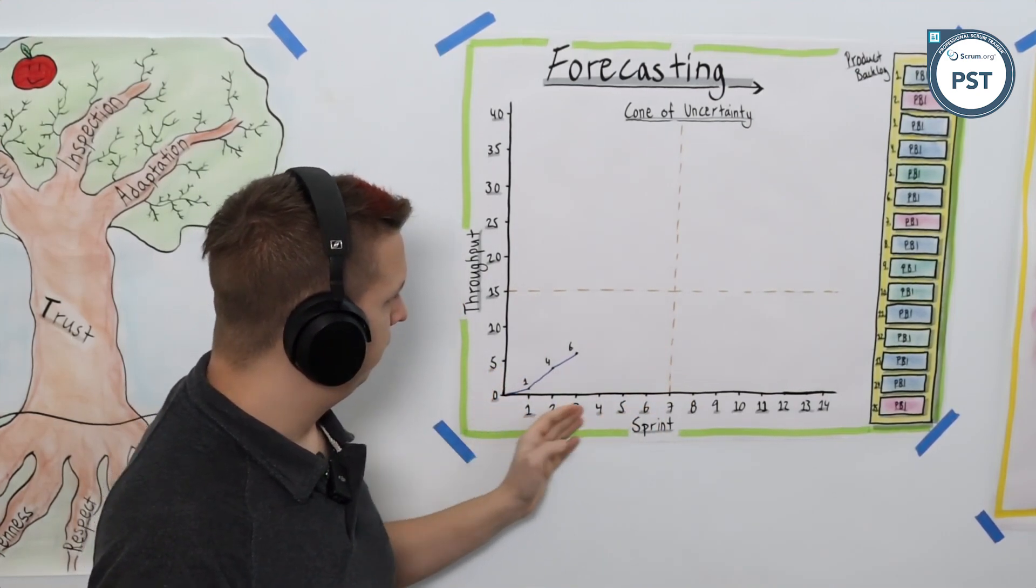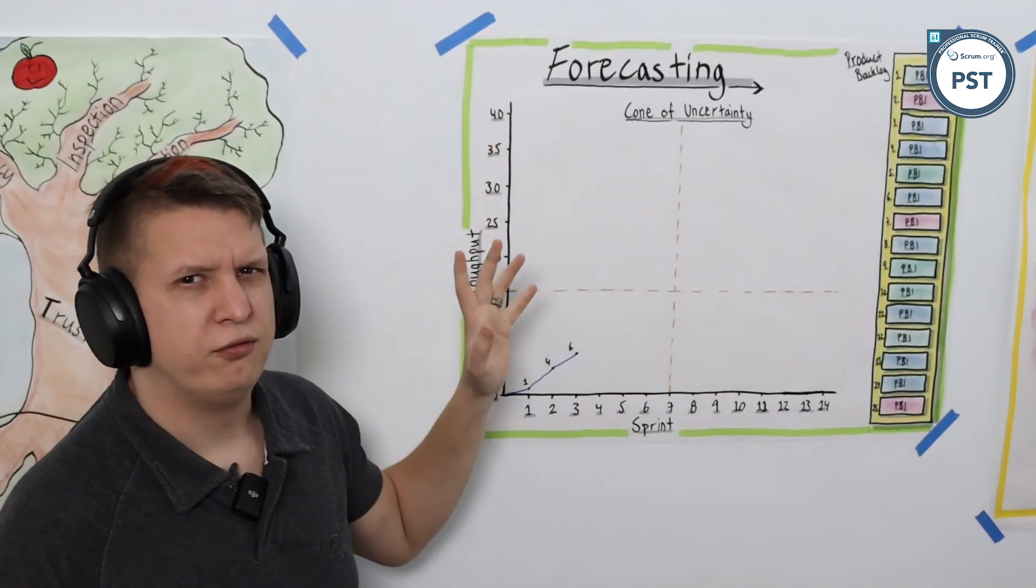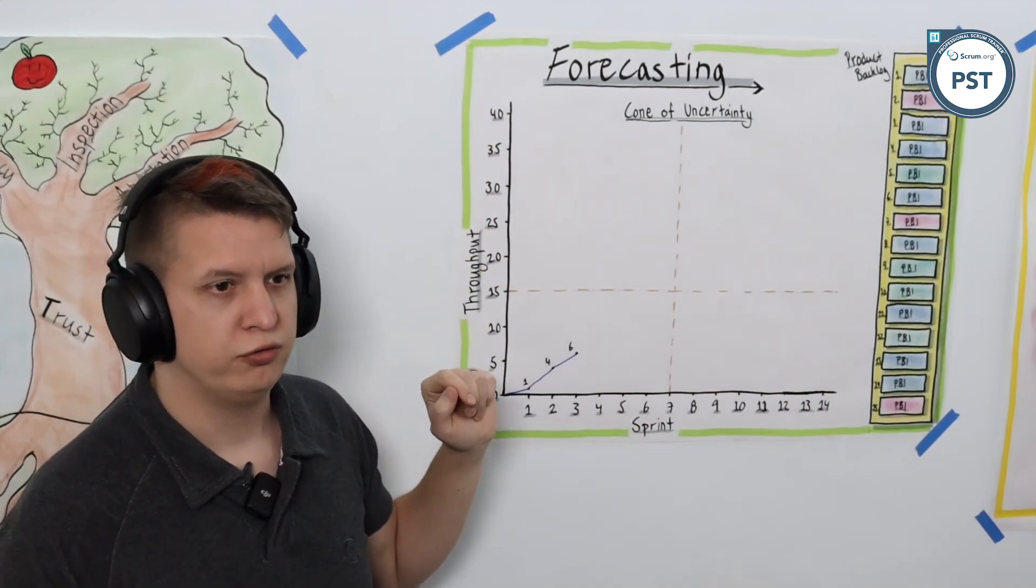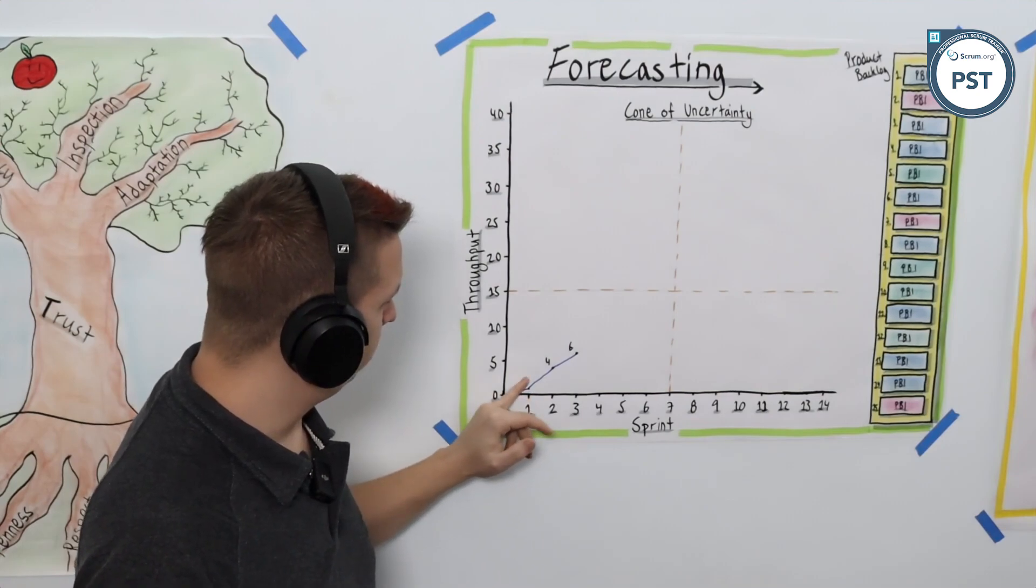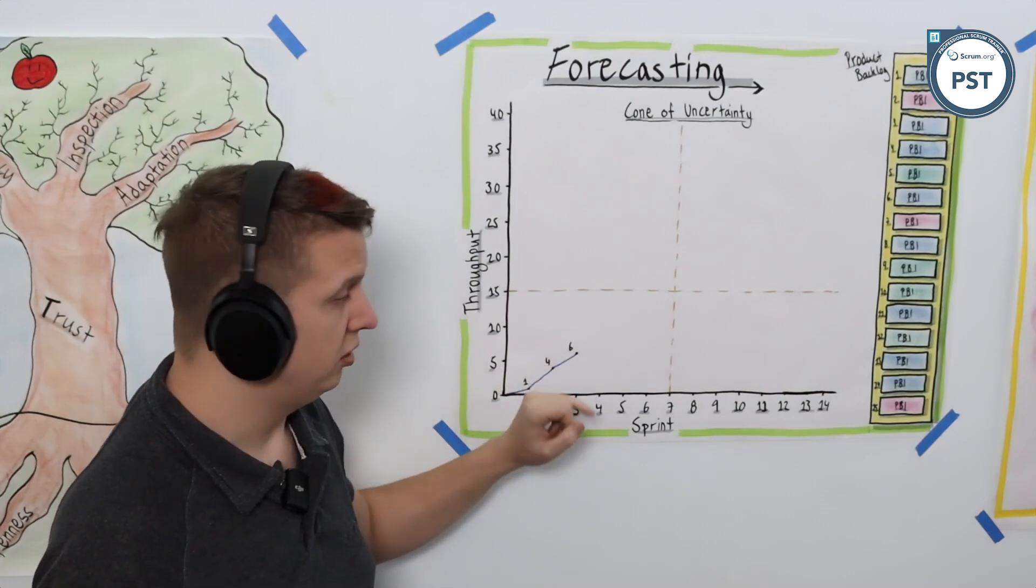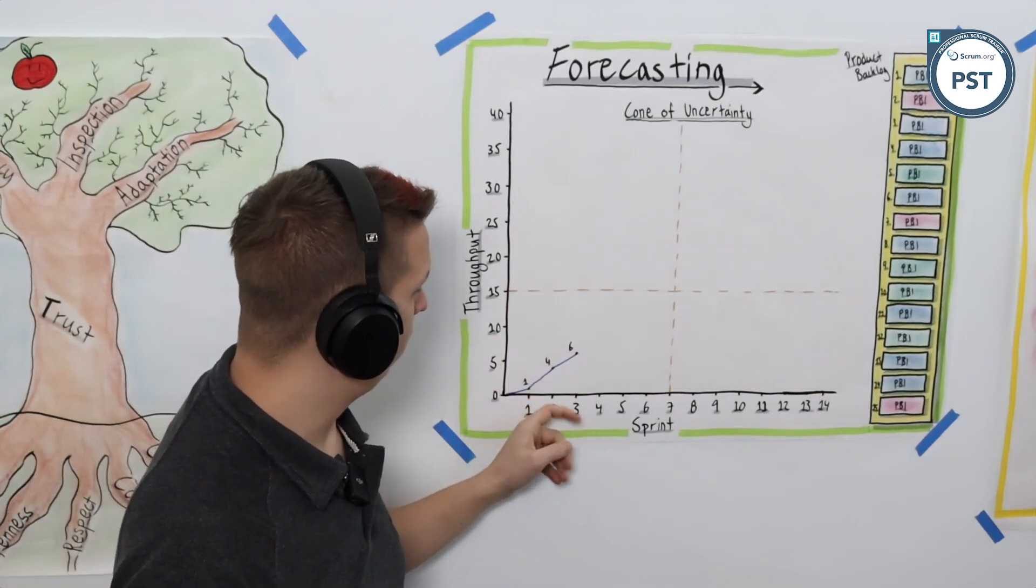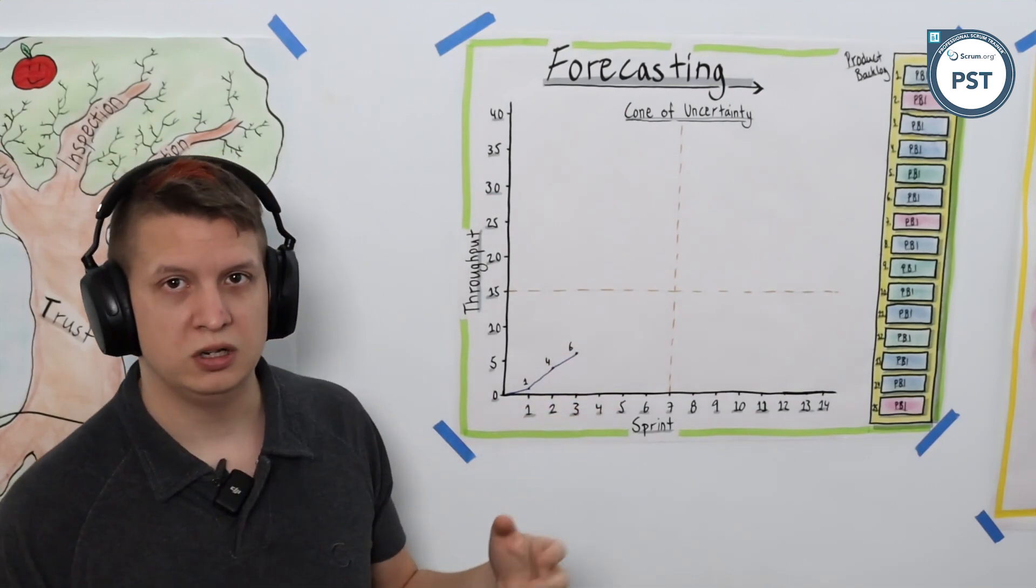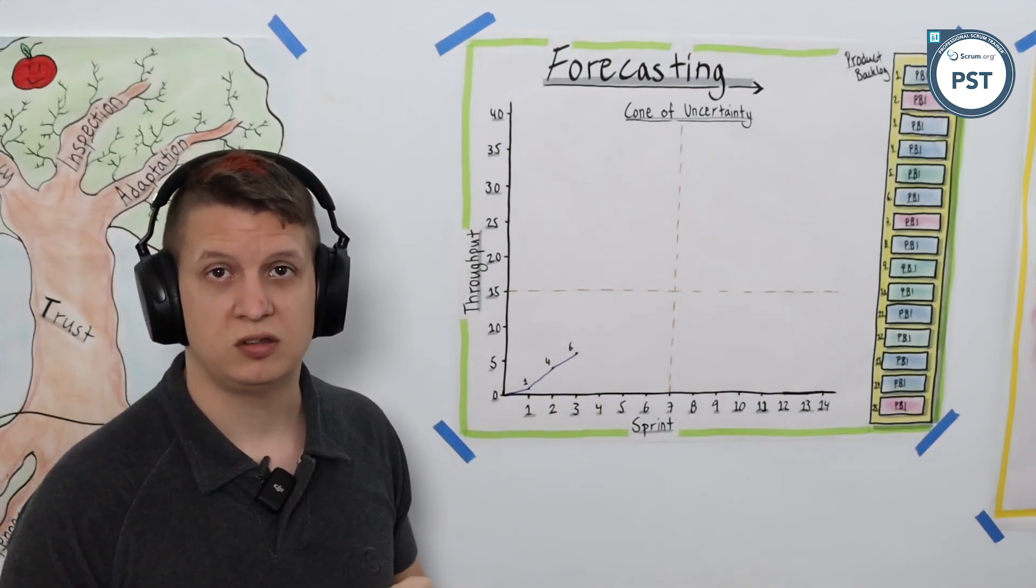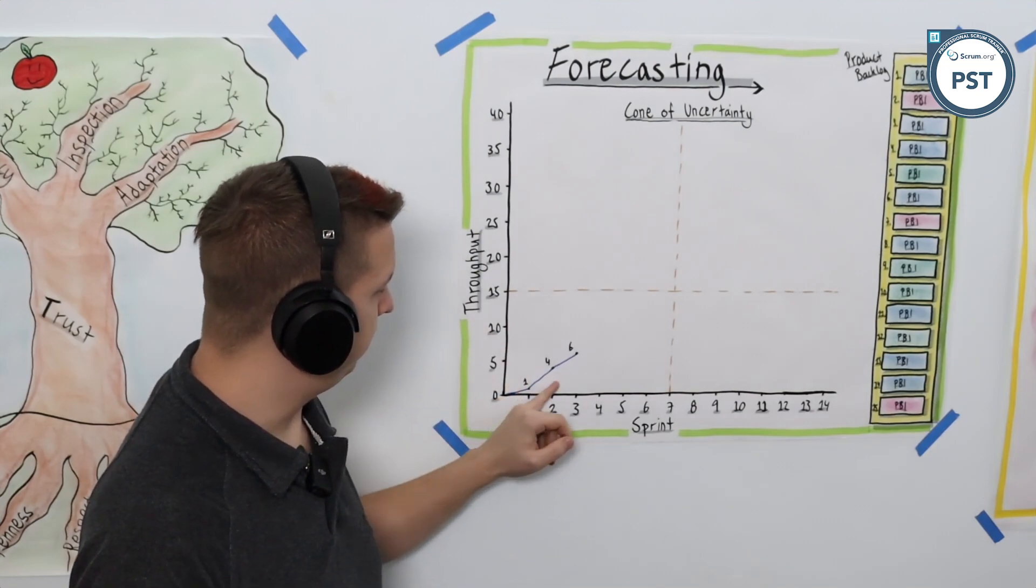We have 14 sprints and a total product backlog of about 40 items. In our first sprint we got one item done, so our throughput was one. In the second sprint we got three items done, so our cumulative throughput is now four. In the third sprint we got two done, so our cumulative throughput is now six.